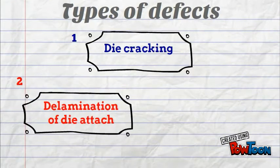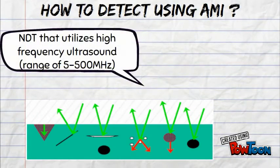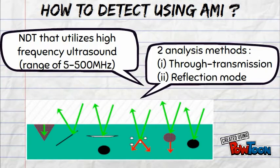Defects in SIP include die cracking, delamination of die attach, and molding compound. These defects can be detected using MI, which utilizes high frequency ultrasound.